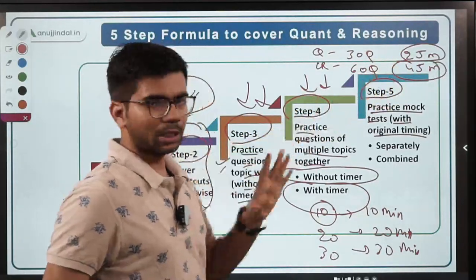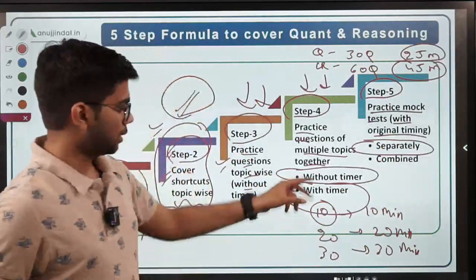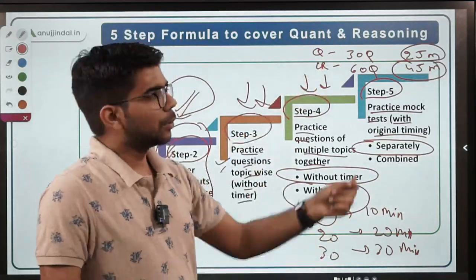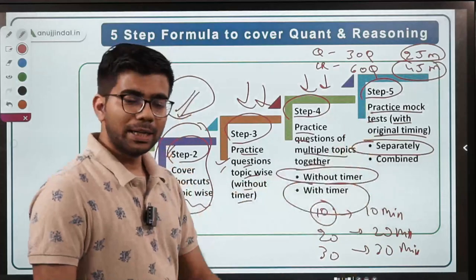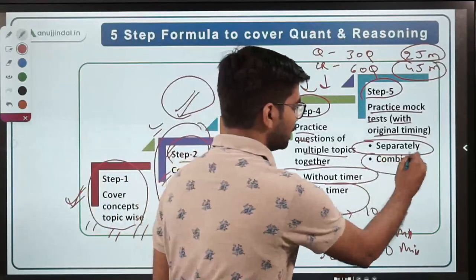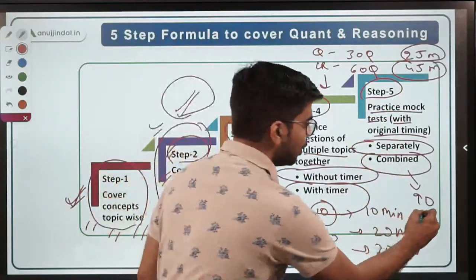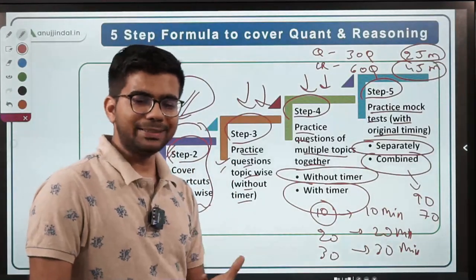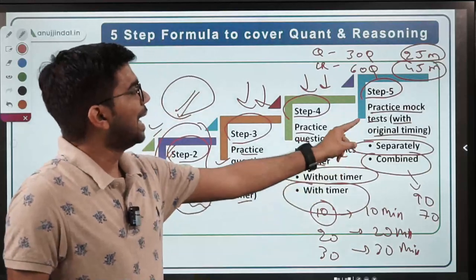In step five, you will first attempt section-wise mock tests. On a given day, practice 30 questions of quant with 25 minutes, and on another day, 60 questions of reasoning with 45 minutes, separately. Then gradually increase your concentration span and take a combined test of 90 questions — 30 of quant and 60 of reasoning — with a combined time of 70 minutes. These five steps are the right approach to covering quant and reasoning and improving your score.